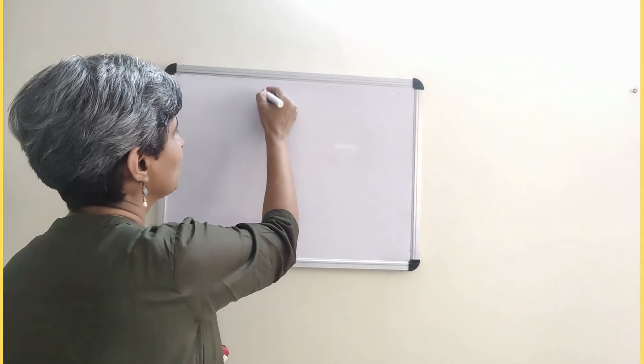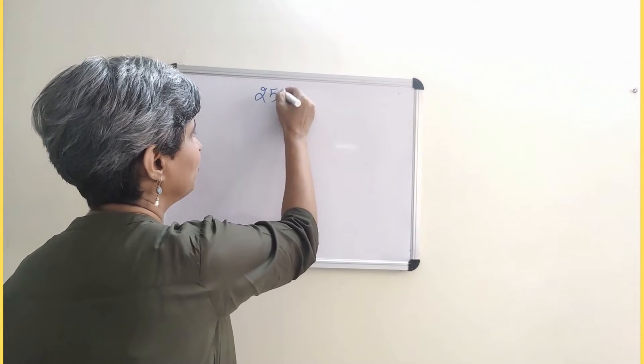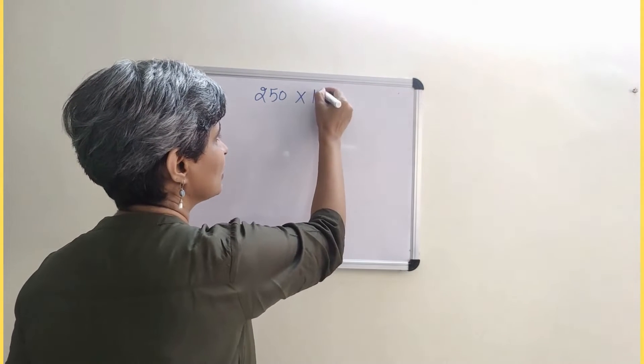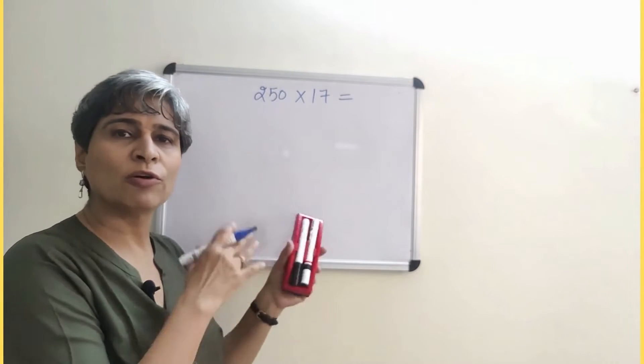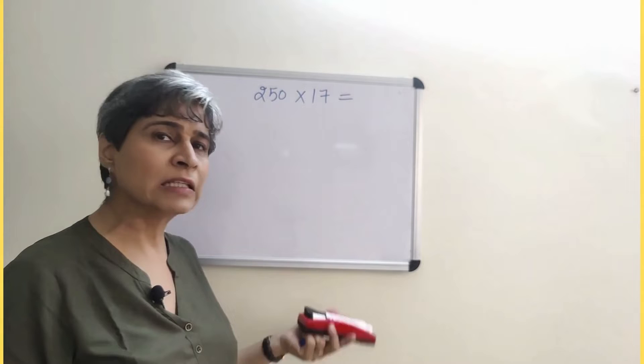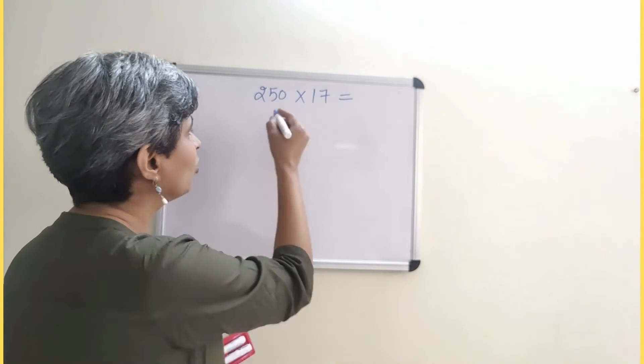We'll take one more with multiplication. If I'm multiplying 250 into 17, for example, 250 is right in the middle of 200. I can take either 200 or 300. I'll go with 200. 17 being closer to 20.